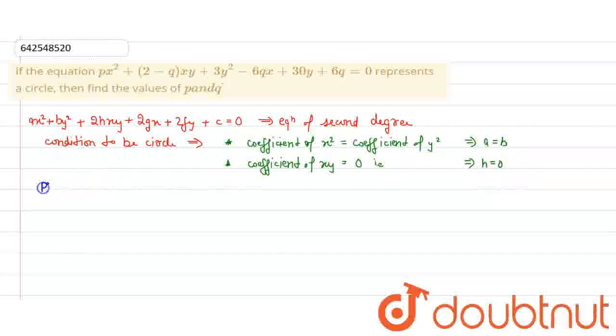So we have the equation px² + (2-q)xy + 3y² - 6qx + 30y + 6q = 0.